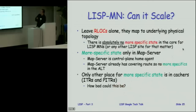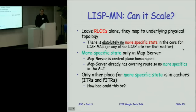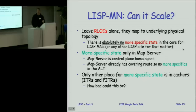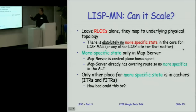Can this scale? The RLOCs map to the underlying physical topology — DHCP leases tell you where you are and routing already handles that subnet. There are no more-specific routes in the core for LISP mobile nodes. The more-specific state is only in the map server, which tracks the slash 32 pointing to locators at the home site. The map server is like a home agent but in the control plane, not the data plane — that's what makes it different from mobile IP. The map server already has a covering route so no more specifics are injected into the ALT. The only other place where more-specific state must be kept is in the current cachers — the people currently talking to you.